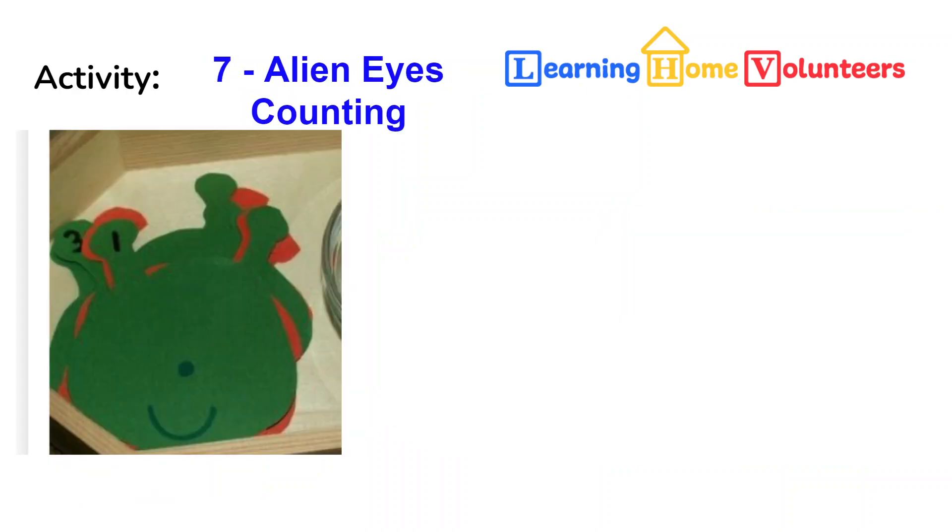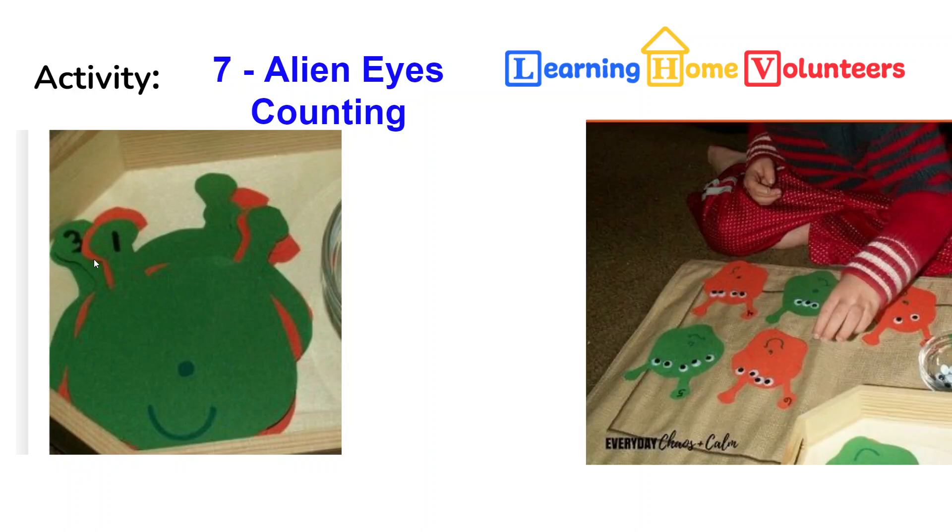This is activity number seven, alien eyes counting. In your bag, you're going to find ten aliens and lots and lots of eyes. The idea is you want to put a number on the aliens like we can see here on the antenna. And then have them put the corresponding number of eyes on each of the aliens like this. So you can see here this child was supposed to put five eyes on it.